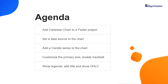You will learn how to set a data source to the chart and how to add a candle series to it. Then I will explain how to customize the primary axis, enable trackball, show legends, and add a title in the candle series chart. Finally, I will show you how the Open High Low Close series can be created using the same data.